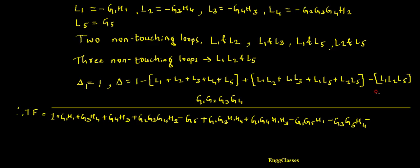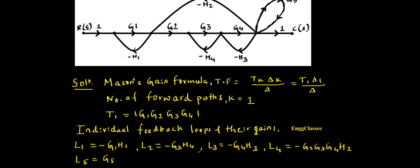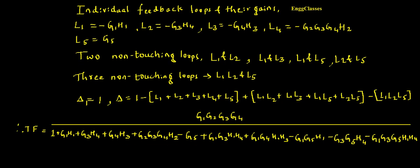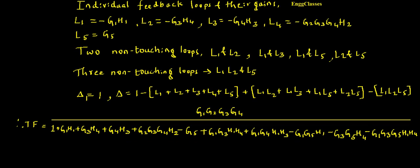Finally, the three non-touching loop product: L1·L2·L5. L1 = −G1·H1, L2 = −G3·H4, L5 = G5, so this becomes +G1·G3·G5·H1·H4. This completes the delta, giving the final transfer function. This is an important numerical using the signal flow graph and Mason's gain formula. I hope you understood — please let me know any doubts in the comment section. Thank you for watching.